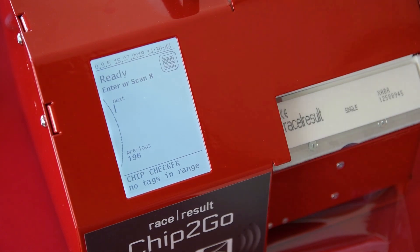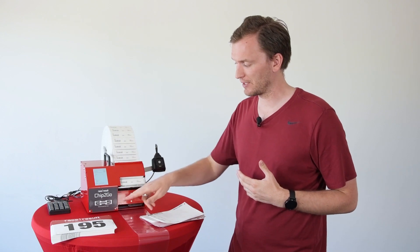On the front of the unit we have the touch screen display which can be read even in sunlight, so can be used outdoors at events. Below that is our chip check antenna which can be used to check the chip and shows the current chips in range on the screen.